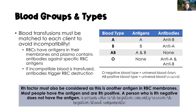O negative is the universal blood donor because it has no antigens, so everyone can receive O blood. AB positive is the universal blood recipient and can receive type A, B, AB, or O. Red blood cells have antigens in their membranes and plasma contains antibodies specific against RBC antigens. Transfusing an incompatible blood type causes antibodies to trigger red blood cell destruction, resulting in anemia.